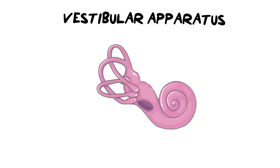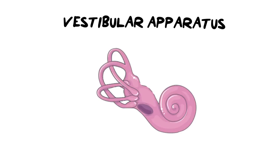As we jump into the content, we need to make sure that we are all looking at exactly the same thing. When I speak about the vestibular apparatus, we are talking about everything past this line that I'm going to divide in half here. This side we've already covered — that is the cochlea and it's the structure we hear with. We are going to be talking about the vestibular apparatus and its importance in maintaining posture and balance.